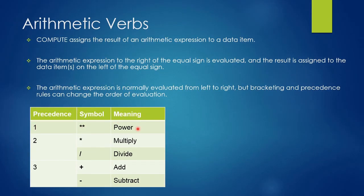First precedence is for power, which is denoted by symbol of double star. Second precedence is for multiply and divide. Multiply is denoted by single star whereas divide is denoted by a slash. Third precedence is for add and subtract. Add is denoted by plus sign and subtract by minus sign.